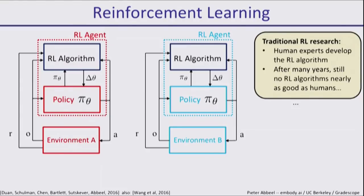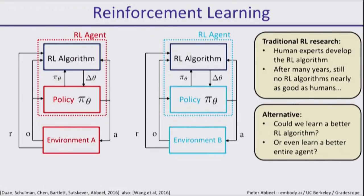Overall, what we see is that the agent consists of two parts: a reinforcement learning algorithm and a policy. Human experts develop the RL algorithm and then let the algorithm fine-tune the policy. But even though we've spent at least 50 years on designing RL algorithms, we still don't have any algorithms that are as good as humans in terms of speed of learning. So maybe it's time to also let the other part be learned. Learn the entire agent rather than only learn the policy.